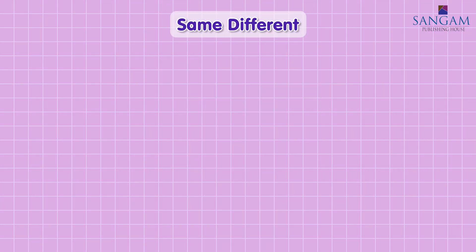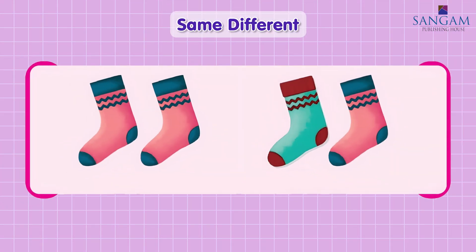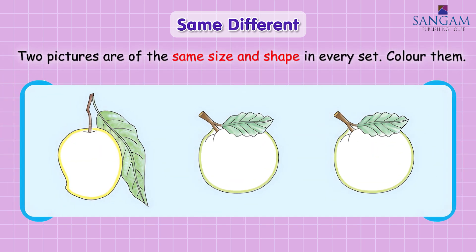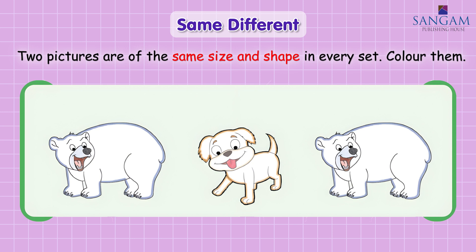Same. Different. We have same socks. We have different socks. Two pictures are of the same size and shape in every set. Color them. What do you see, children? One mango, two oranges. Let us color oranges. And you see bear, dog, bear. So let us color two bears.